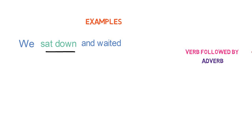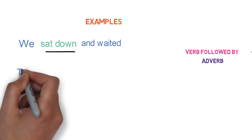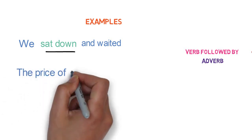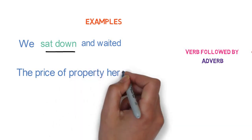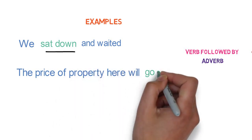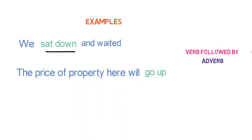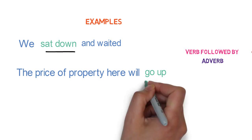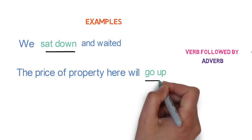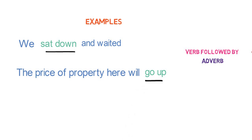Let's look into the next example. 'The price of the property here will go up.' Here, 'go' is the verb and 'up' is the adverb. And the whole group of words 'go up' is a phrasal verb.